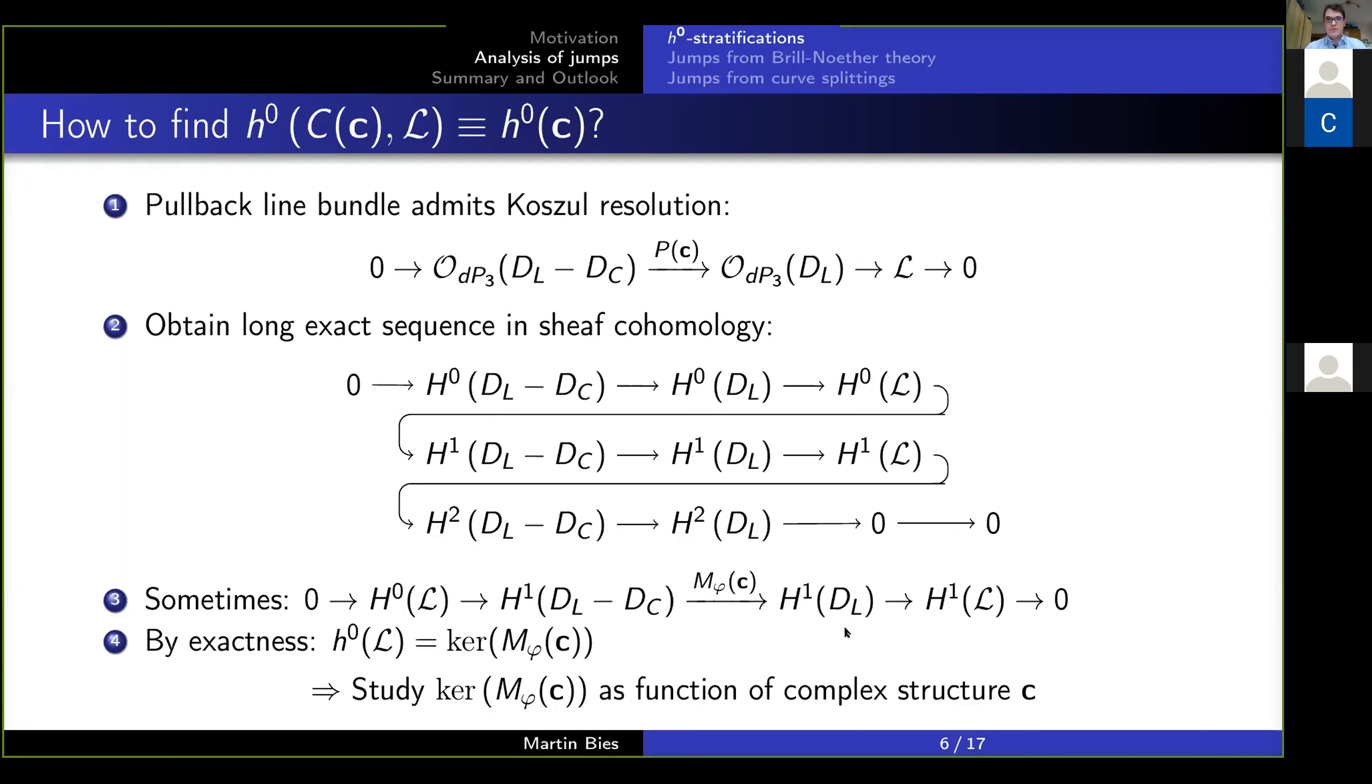And the case that I often see in the works that we're doing right now is this case here, that we have this space here and this space here defining our vector-like spectrum. These spaces we want to know, and in the middle, we have spaces which we can compute on the dP3, and we need to know this mapping in between. Then from the exactness of this sequence, we actually find that the dimension of this space is just the dimension of the kernel of this map here. So at the end of the day, it boils down to the question: you have a matrix, find the kernel as a function of the complex structure coefficients.